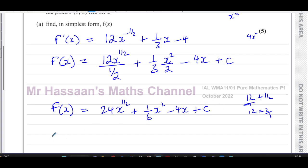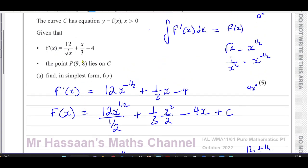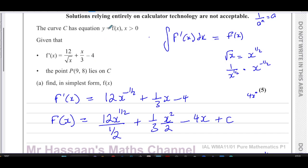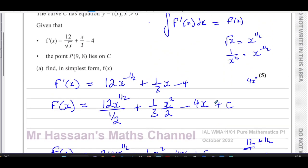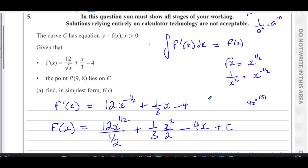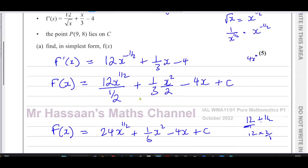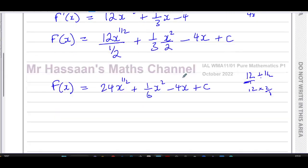Many people might think we've finished the question now that we've found f(x), but we also have the further information about point P which allows us to complete f(x) fully by finding the value of c.